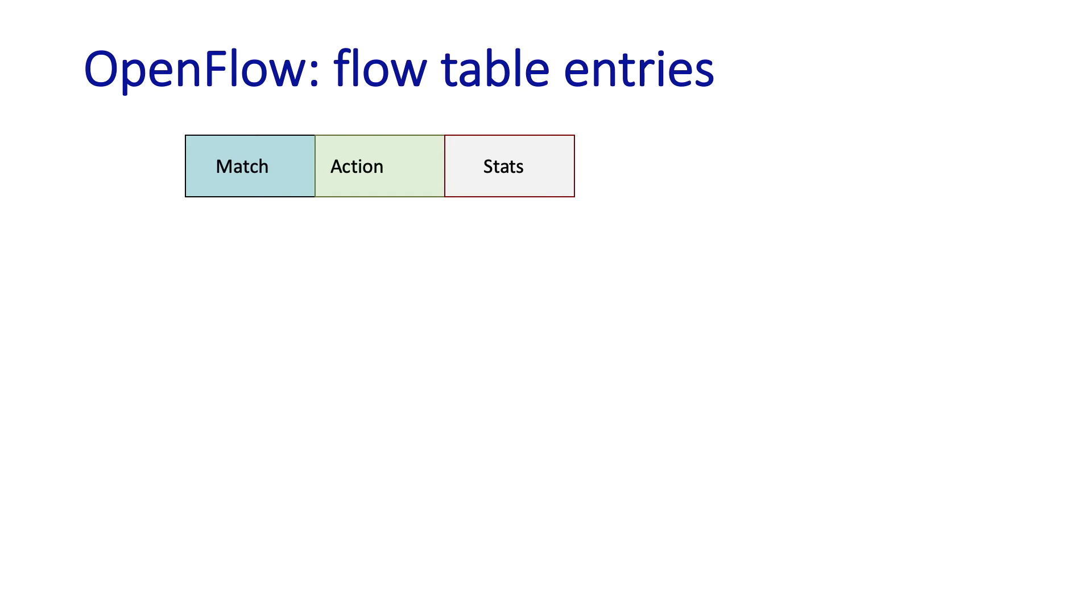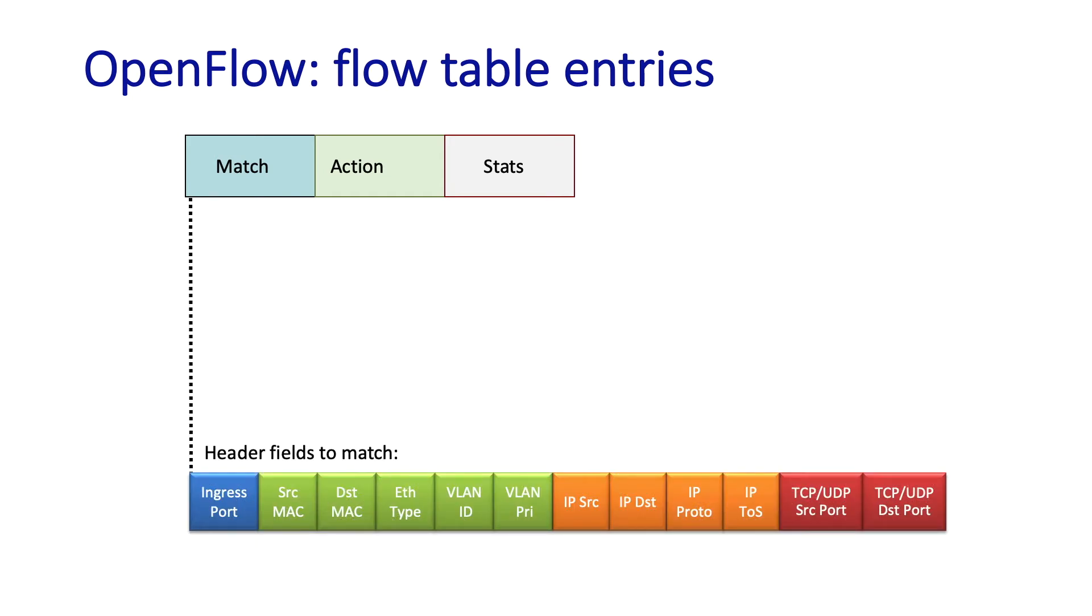In OpenFlow 1.0, any of 12 different header fields can be used in the match. As you might expect, one can specify a match on a number of different network layer IP header fields: the IP source, IP destination, upper layer protocol, and type of service fields, all of which we've studied earlier.